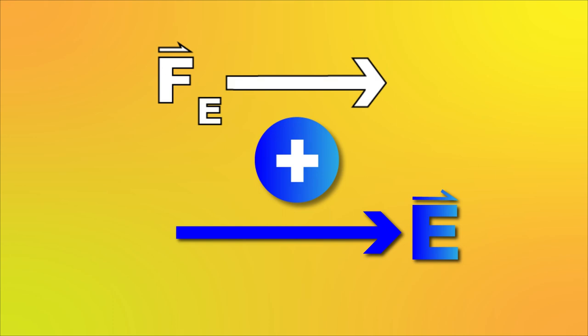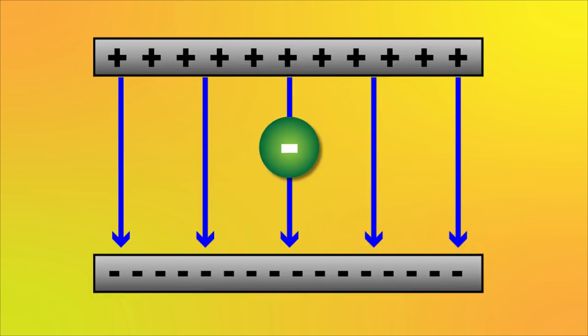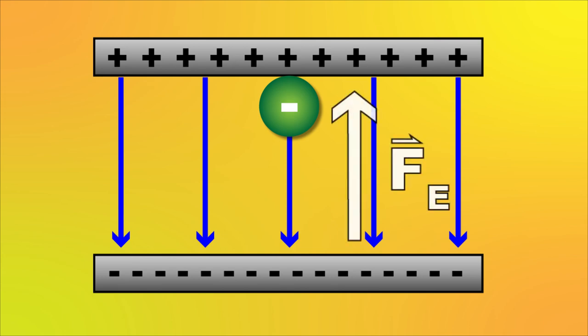So what we've learned here is that for a positive particle, the electric field and electric force are always in the same direction. A negative particle will do the opposite to the positive particle. For a negative, the electric force and the electric field are always in opposite directions. These are really important statements to remember.